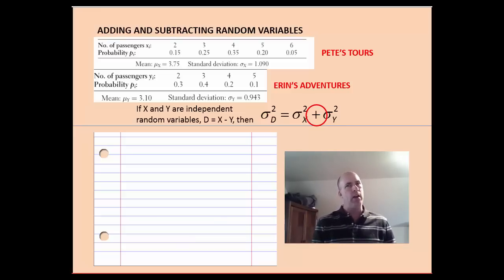One quick reason why is imagine if they had the same standard deviation. If we squared those, they would have the same variance, but if we subtracted them, suddenly we would have a variance of zero, implying that there's, on average, no difference between the two days. And that doesn't seem true. So, variances add.